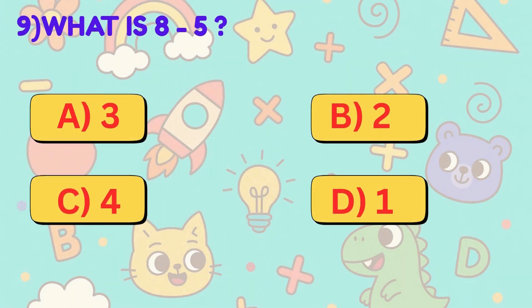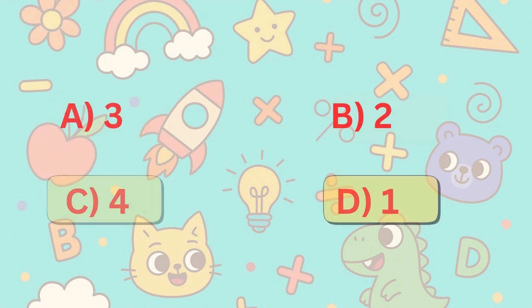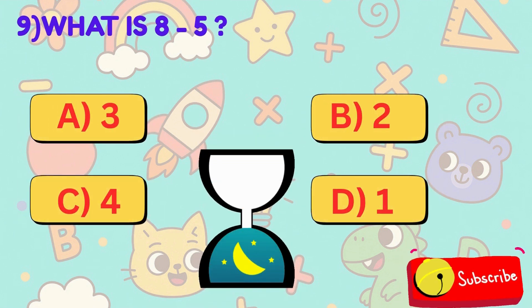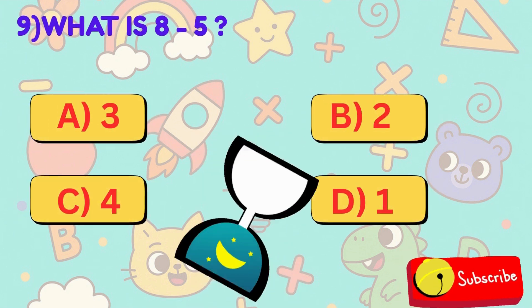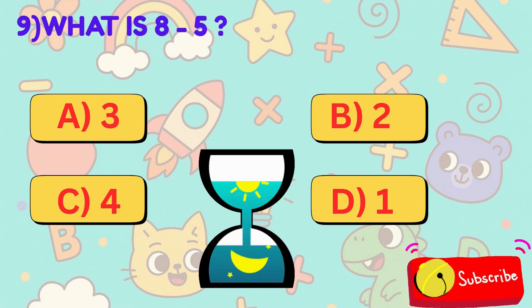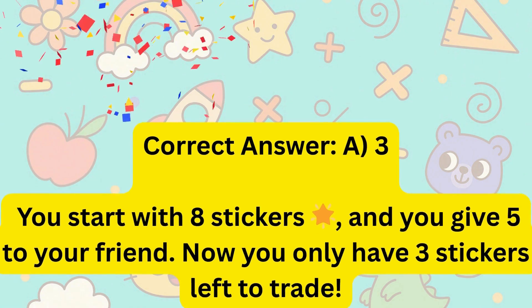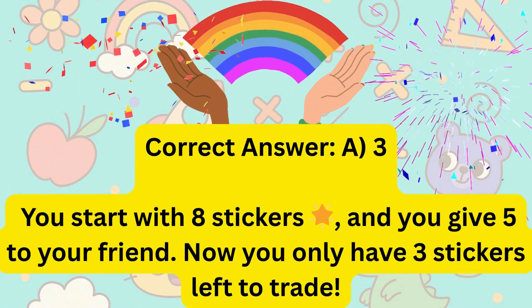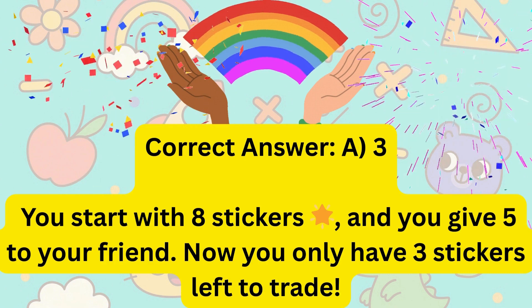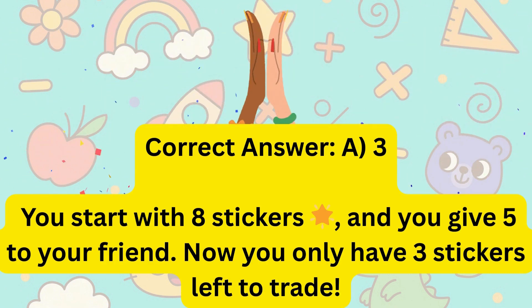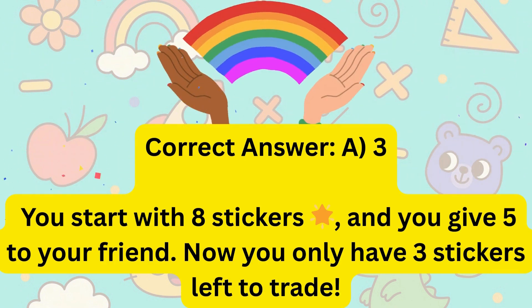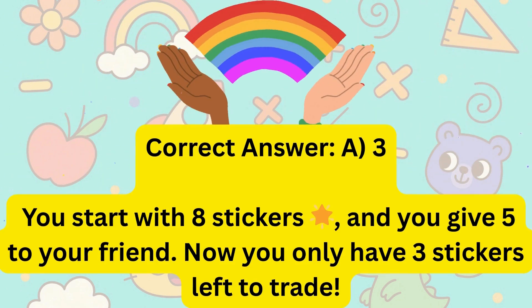9. What is 8 minus 5? Is it A, 3, B, 2, C, 4, or D, 1? Correct answer is A, 3. You start with 8 stickers and you give 5 to your friend. Now you only have 3 stickers left to trade.